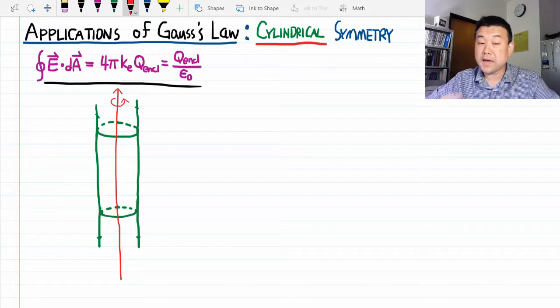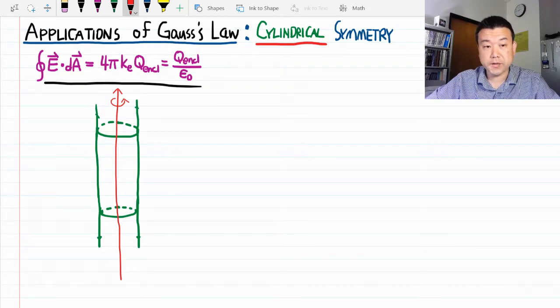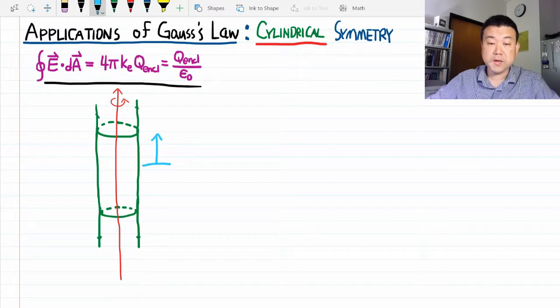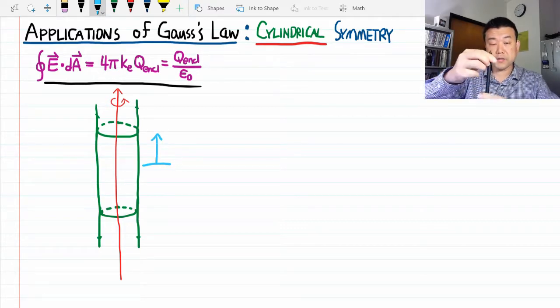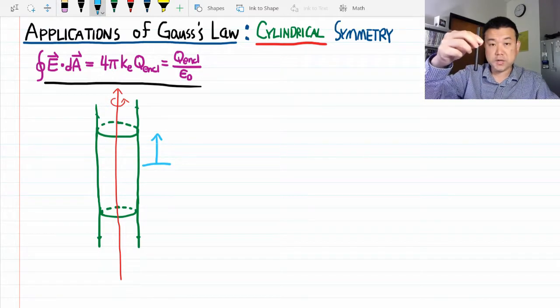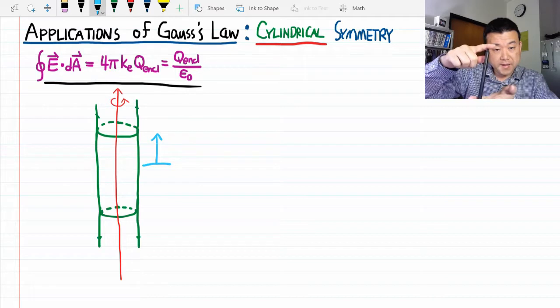We gain a new type of symmetry with cylindrical geometry. As long as we have an infinitely long cylinder, we have translational symmetry. That means if we translate the cylinder, we don't change anything. For a finite cylinder, it's clearly not true.